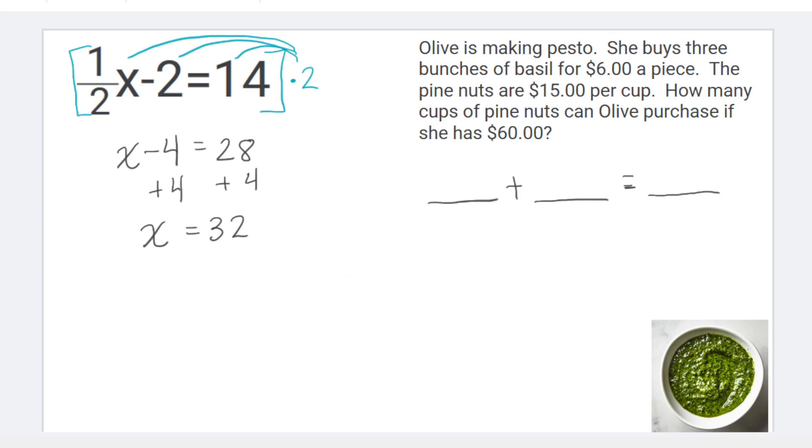So if I read this word problem, it says Olive is making pesto. She buys three bunches of basil for $6 a piece. The pine nuts are $15 per cup. How many cups of pine nuts can Olive purchase if she has $60?